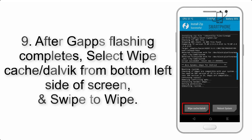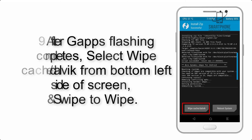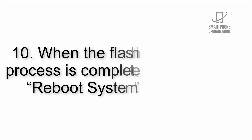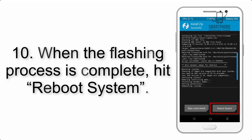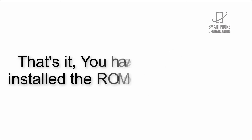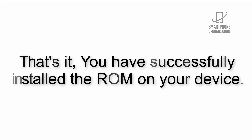Step 9: after GApps flashing completes, select Wipe Cache and Dalvik from the bottom left side of the screen and swipe to wipe. Step 10: when the flashing process is complete, hit Reboot System. That's it — you have successfully installed the ROM on your device.